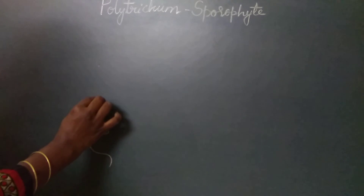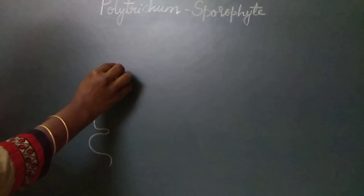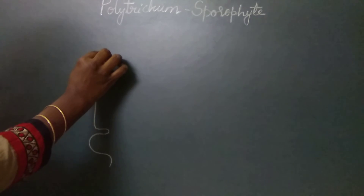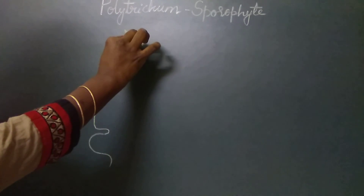The internal structure of the capsule shows three distinct regions: the basal part which is called the apophysis, the central region called the theca, and the upper part called the operculum.